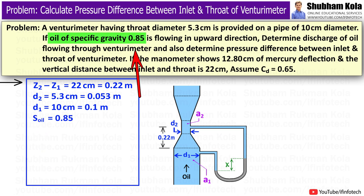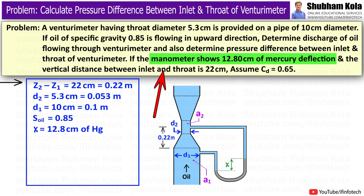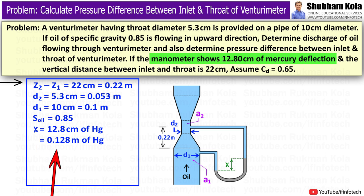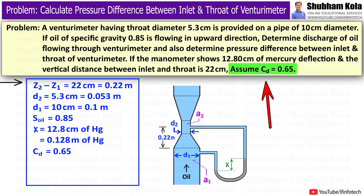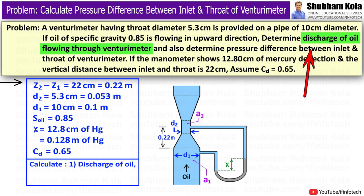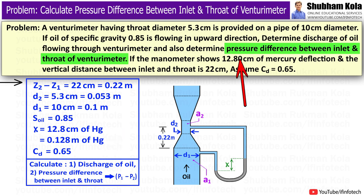The specific gravity of oil is given as 0.85, and the manometric reading is 12.8 cm of Hg, i.e. x is equal to 0.128 m of Hg. The coefficient of discharge CD is given as 0.65. We want to calculate the discharge of oil flowing through the Venturimeter, and also the pressure difference between the inlet and throat.